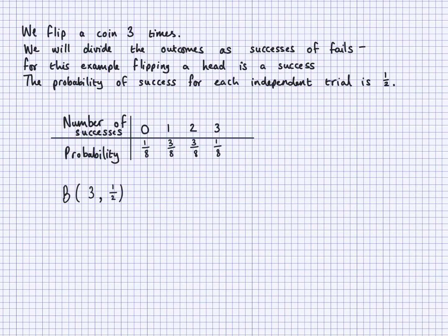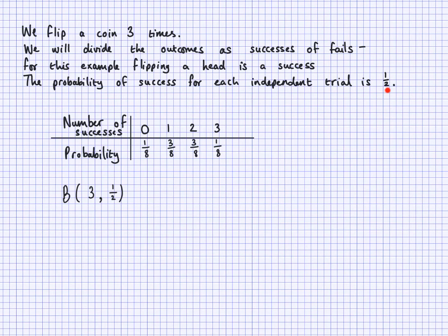The binomial distribution can work out all the probabilities at once. There are important conditions that must hold for us to apply it: first, the number of trials must be fixed — here it's three. Second, the probability of success must be the same for each trial. For a coin, it's always 1/2; it can't be 1/2 the first time, 1/5 the second time — that would not be suitable for a binomial distribution.